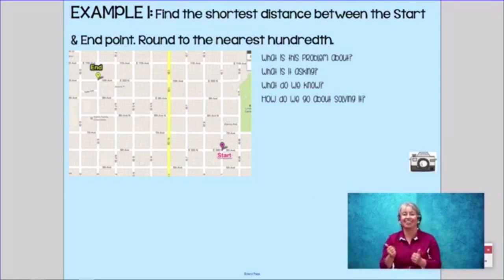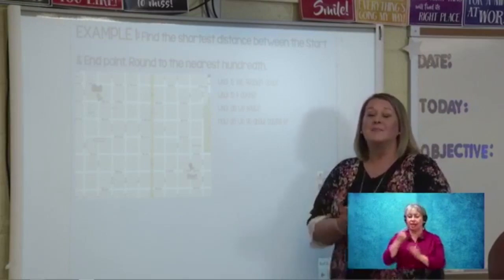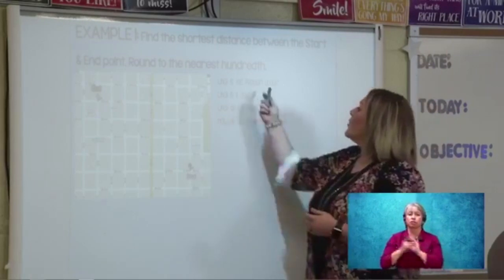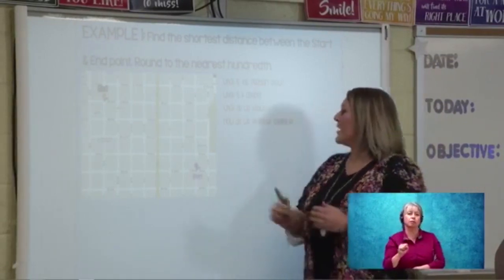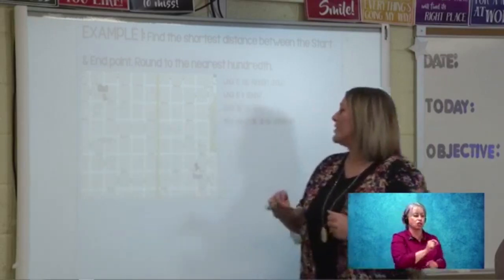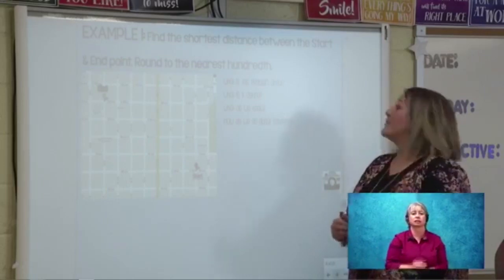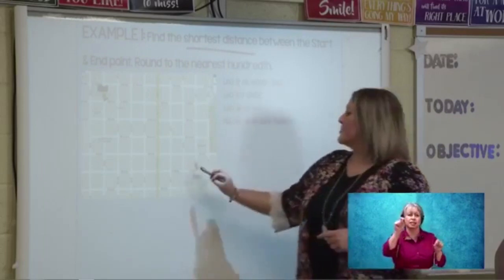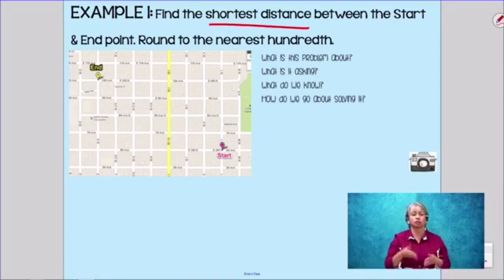Our example one, let's tackle it. Find the shortest distance between the start and end point, and round to the nearest hundredth. So we want to ask ourselves first, what is this problem about? This goes along with our ready math material. Well, to me it looks like it came off Google Maps or some type of mapping program. We have our starting point here, we have our ending point here, we have several different roads and blocks, so it looks like a map. What is it asking? It's asking us to find the shortest distance between this point and that point, our start and end. And what do we know? Well, we know where our start point is, and we also know where our end point is. And how do we get to solving it? So let's travel. We have to use the roads here. We can either travel up or we can go left. Let's see what you guys want to do. Up. All right.